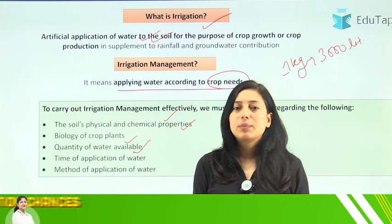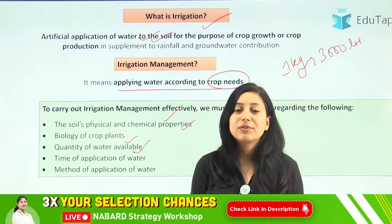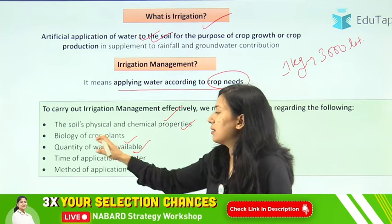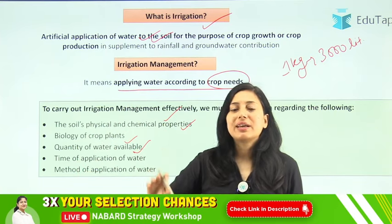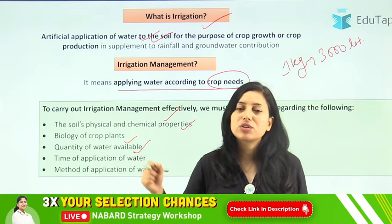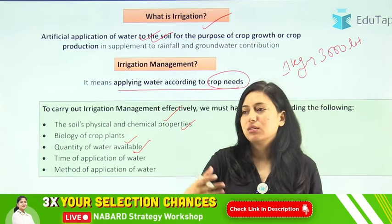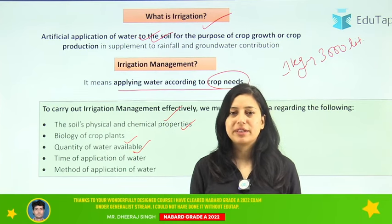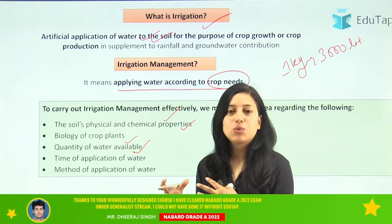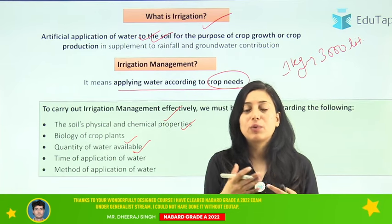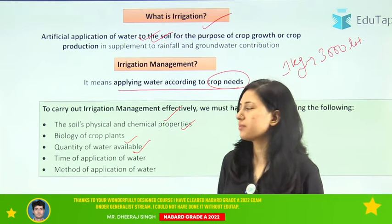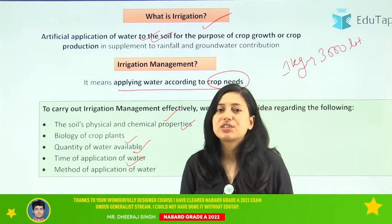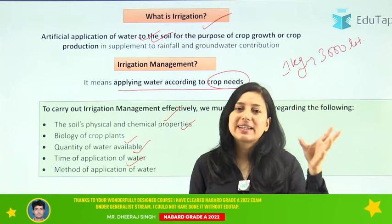The third factor is quantity of available water. We have dryland agriculture areas where water availability is less, so our irrigation will depend upon the quantity of water we have available. If an area has less water, they will save it for the crucial stages of the crop when water requirement is highest, rather than following standard recommendations.